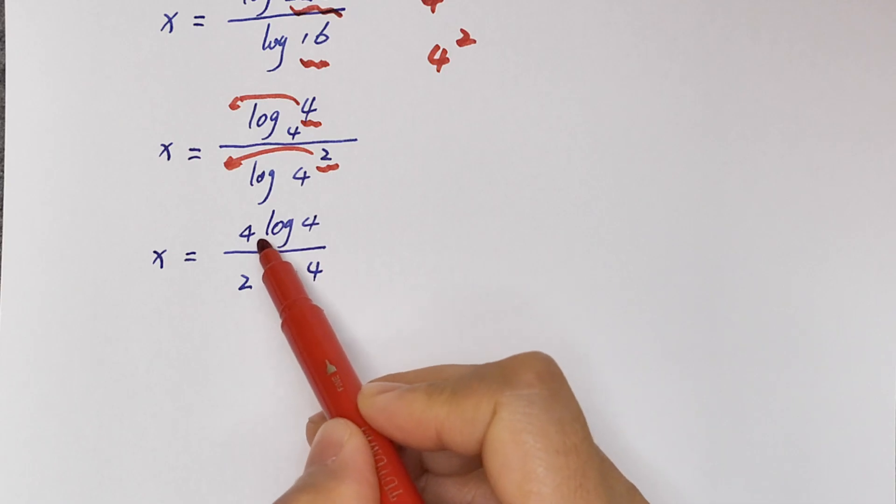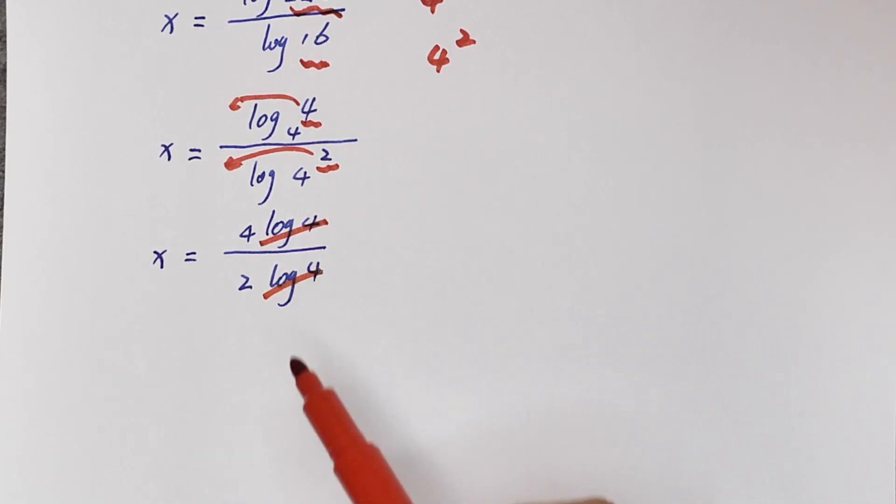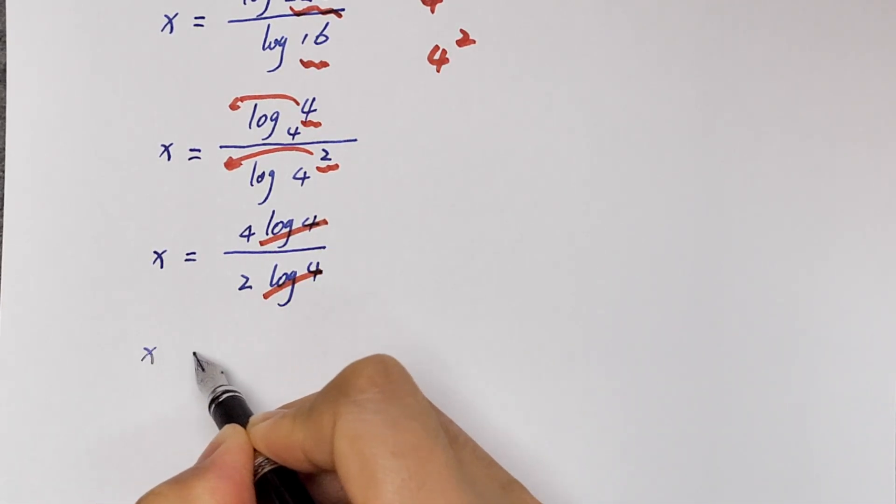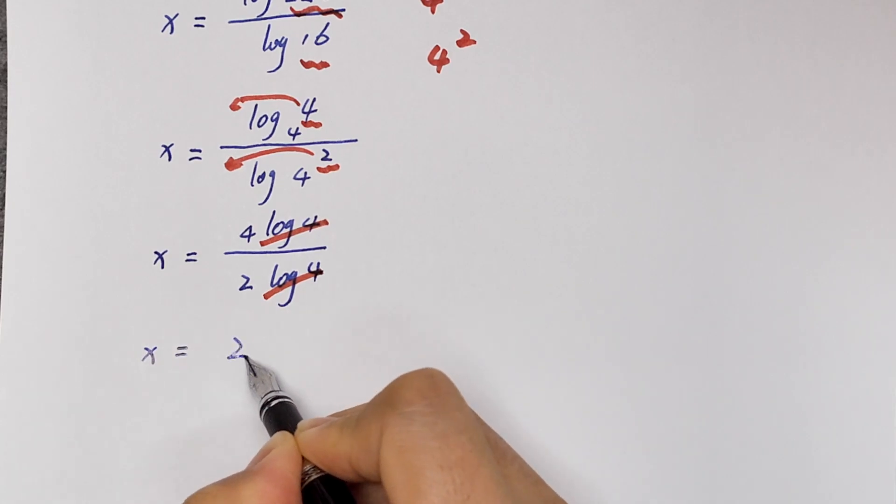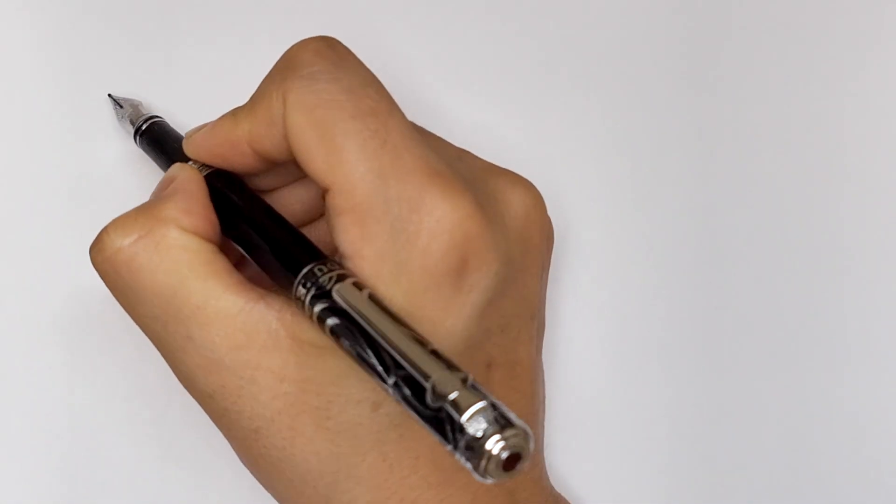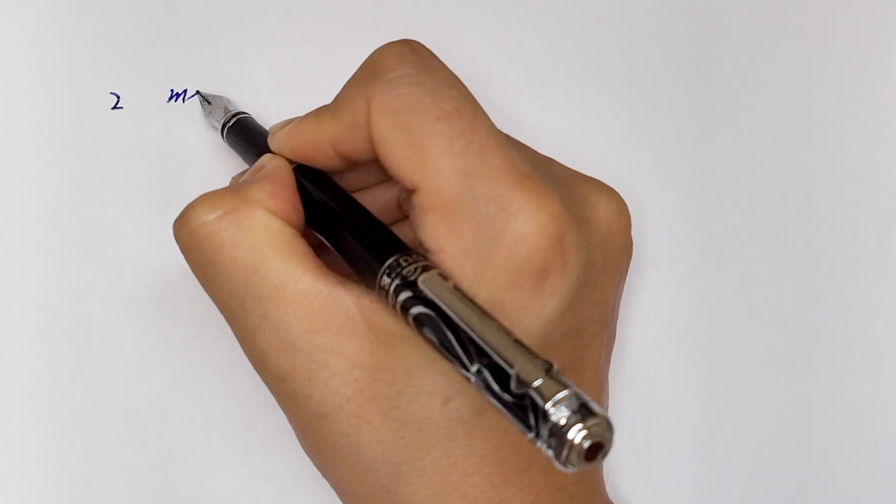And in here log 4 will cancel. So x is equal to 4 over 2, which equals 2. Okay, let's talk about the second method.